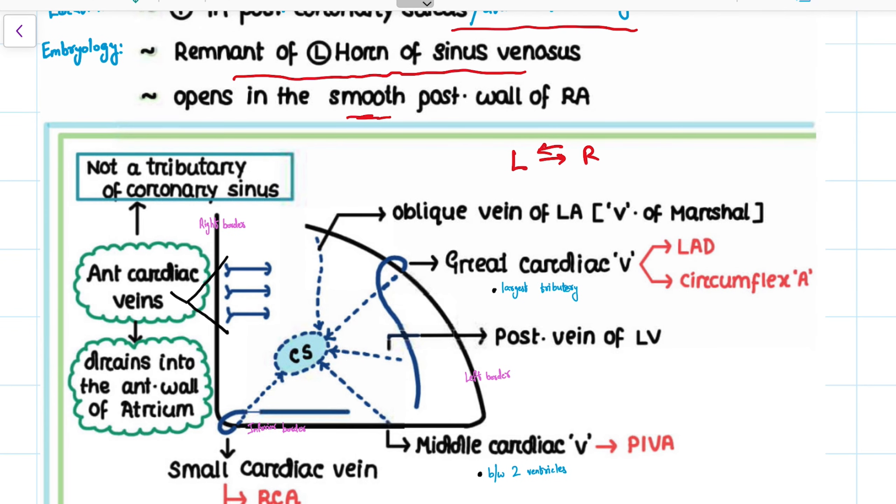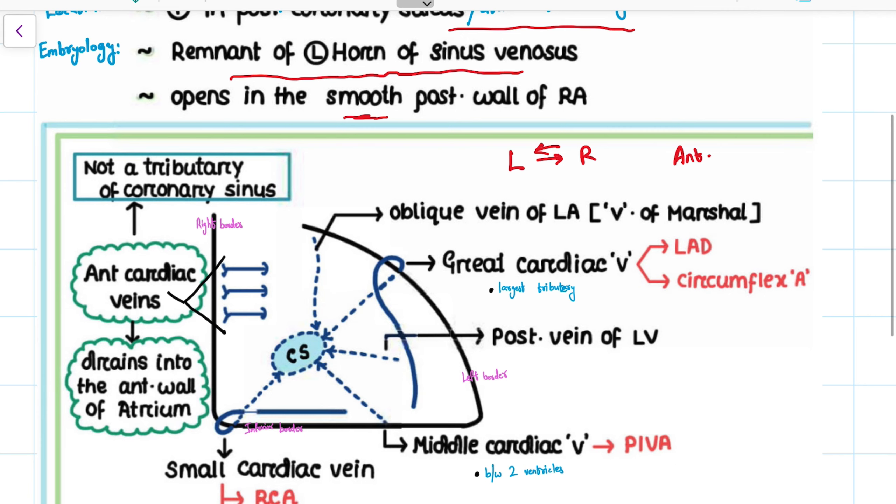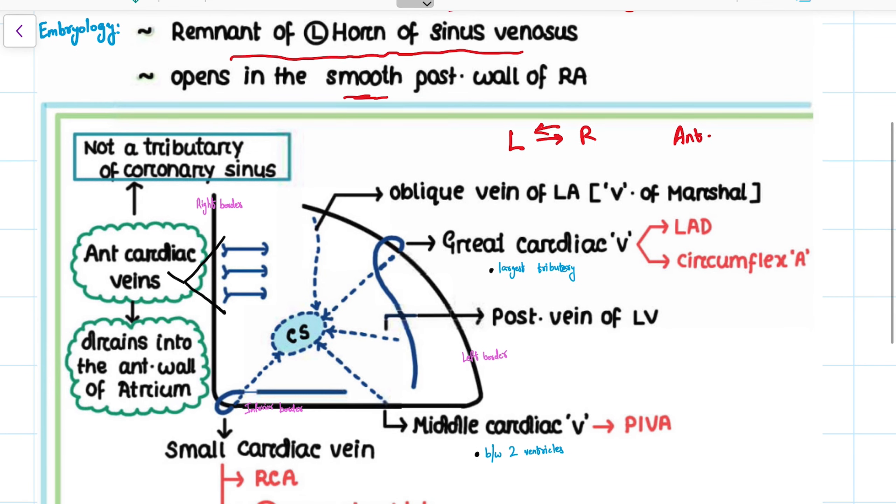So I would mainly prefer you to view the heart from the anterior way, which will help you to correlate with all the arteries. Firstly, let's see the great cardiac vein. The great cardiac vein is the largest tributary of the coronary sinus.